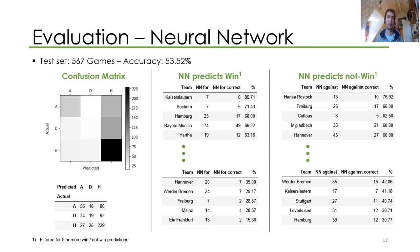Evaluating the neural network: accuracy 53%. On the left-hand side you can see the confusion matrix. What you'll also note is that the model very much likes to predict the home team to win. In the middle column, when the neural network predicts a team to win, the top five teams are based on accuracy and the bottom five have the lowest accuracy. The right column is pretty much the opposite — this is where the neural network predicts the team not to win, so it predicts a draw or the other team to win — again, top five and bottom five based on accuracy.